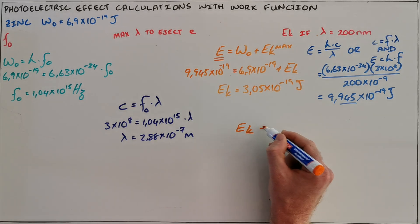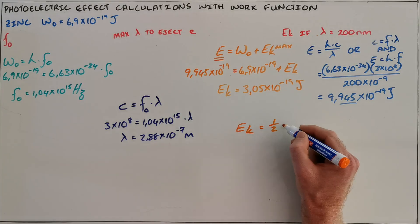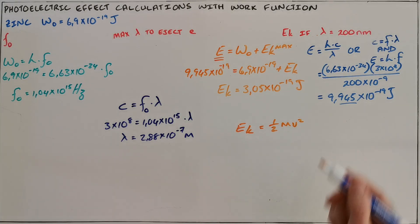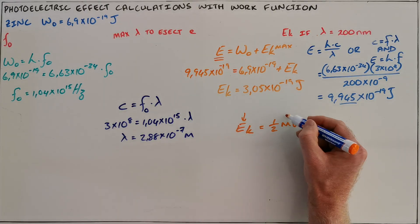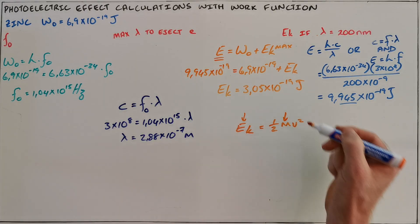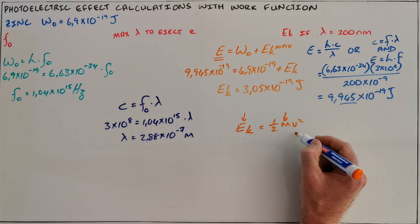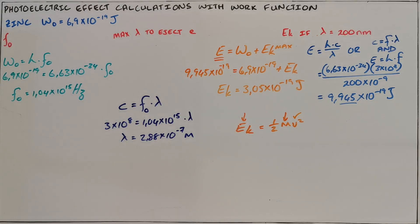A common follow-up question would be to calculate the velocity of an ejected photoelectron. We can do that using the formula kinetic energy equals one half multiplied by the mass multiplied by the velocity squared. Since we now have the kinetic energy and the mass of an electron is a given constant, we can solve for the velocity of the ejected photoelectron.